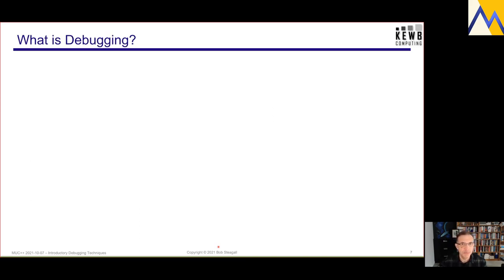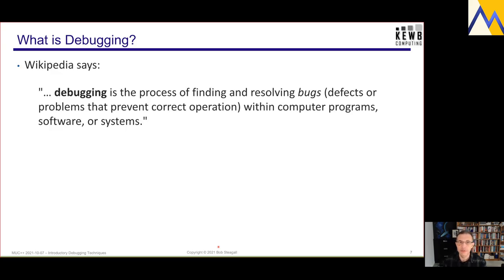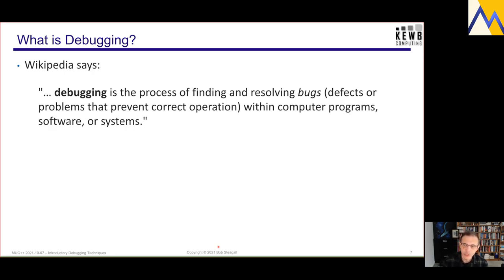What then is debugging? Wikipedia has a very nice definition: debugging is the process of finding and resolving bugs — defects or problems that prevent correct operation — within computer programs, software, or systems. This is a pretty reasonable definition and corresponds to what most professional programmers think of debugging as entailing. But if you look at the definition, there are some underlying assumptions and things that are important in the debugging process.